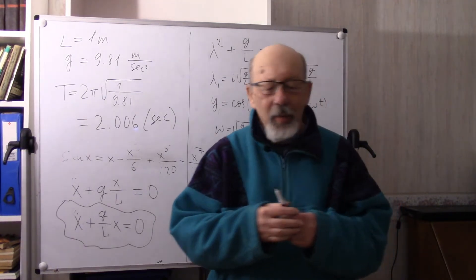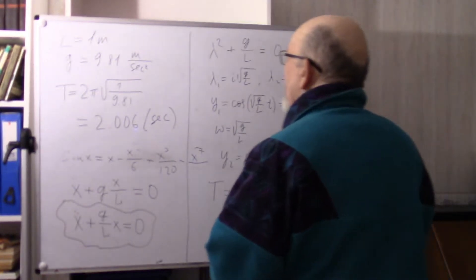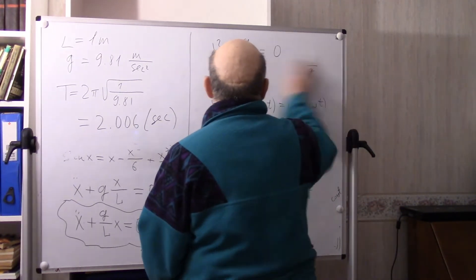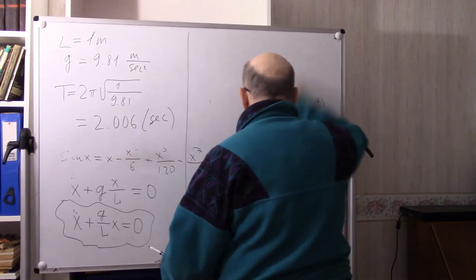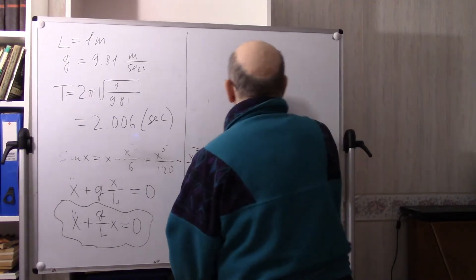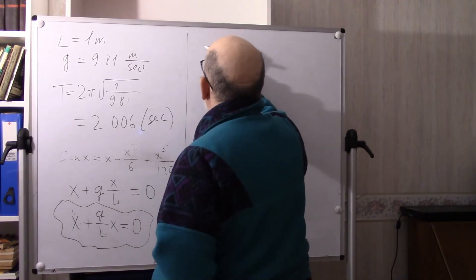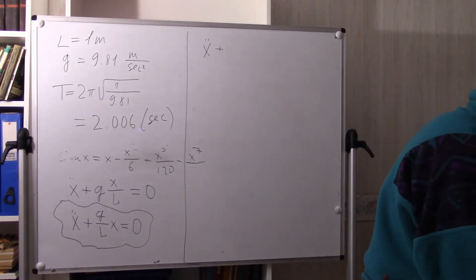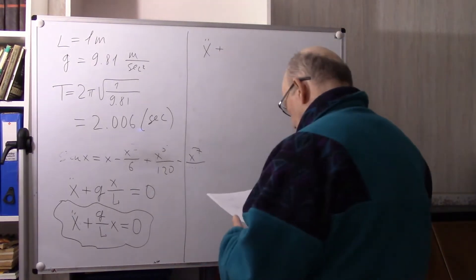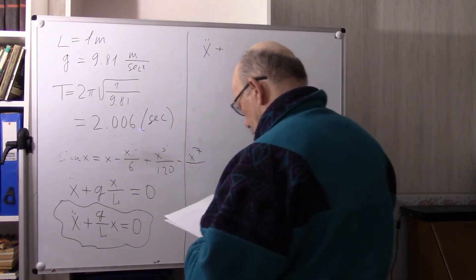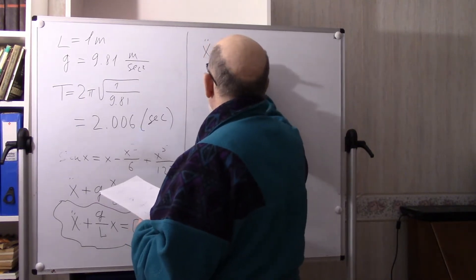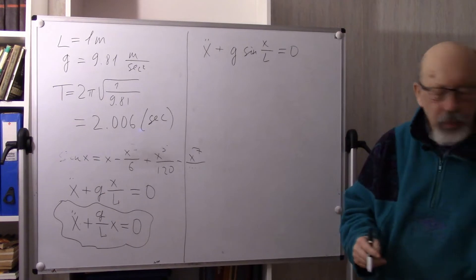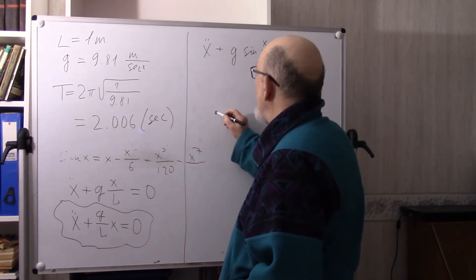Now let us return to the exact equation: X double-dot plus G sine(X/L) equals 0. This is the exact equation for the pendulum, sometimes called the equation of a physical pendulum because it is valid for any amplitude.